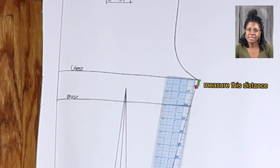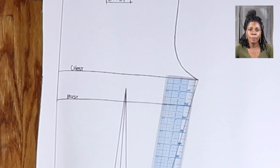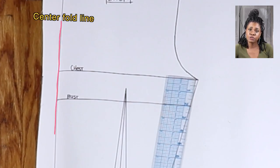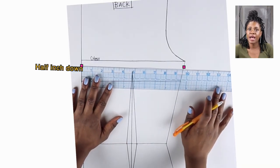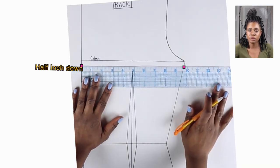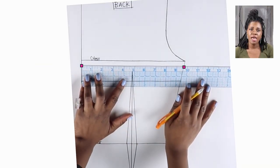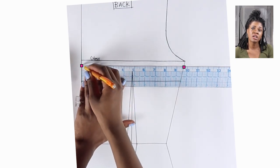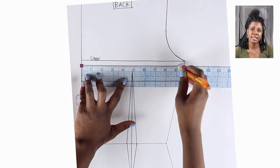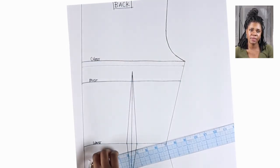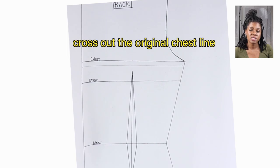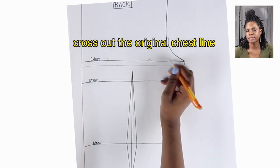Then starting from the mark you just made, measure the distance between that mark and the end of your chest line. In my case the distance was a half inch. Go back to the center fold of the pattern and starting from the chest line, measure a half inch down — it might not be a half inch for you — then draw a horizontal line to connect those two marks. That horizontal line will be the neckline for the back of your pattern.